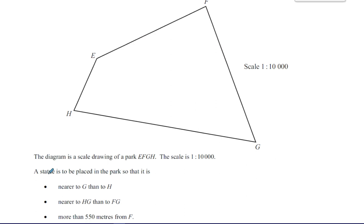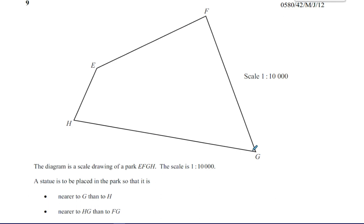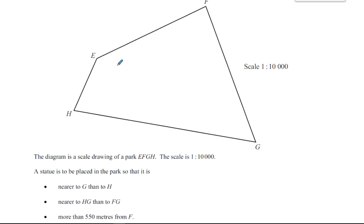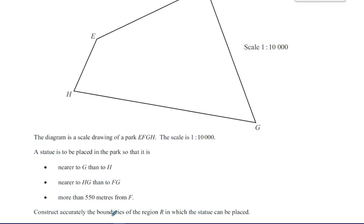A statue is to be placed in the park with the following conditions: it must be nearer to G than it is to H; nearer to HG than it is to FG; and more than 550 meters away from F. The task is to construct accurately the boundaries of the region R in which the statue can be placed.